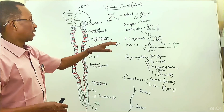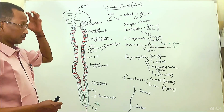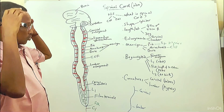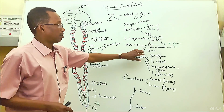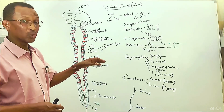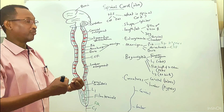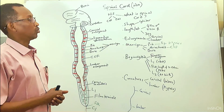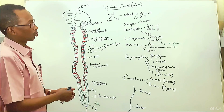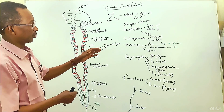The dura mater is the outermost layer that surrounds the spinal cord. Just as within the cranium the dura mater surrounds the brain, it also surrounds the spinal cord. The word 'dura' means durable — it is a very strong, tough, fibrous sheet of membrane around the spinal cord.